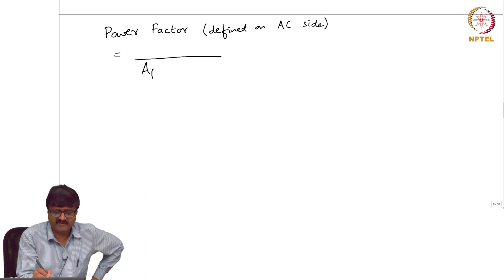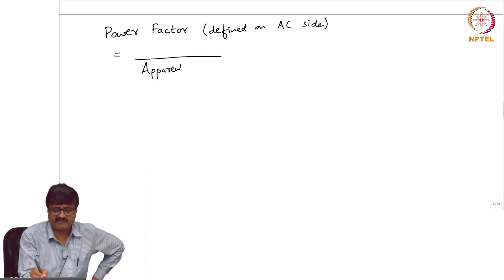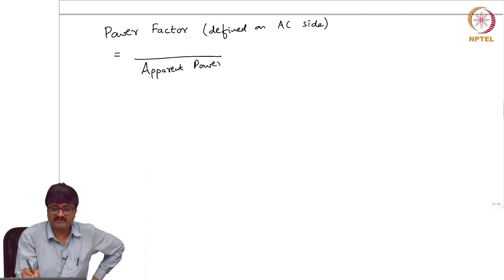Something by apparent power. Apparent power is correct. What is the numerator? Active power.